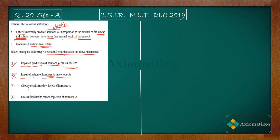The third option says: obesity results in a low level of hormone A. This is not correct because it was given that fat cells normally produce hormone A, and obese people already have fat. So it would not result in a low level of hormone — it would result in a greater level of hormone. So the third option is incorrect.